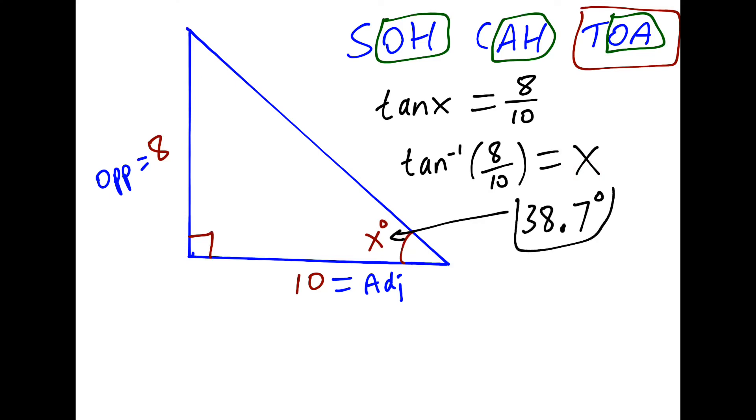It turns out this angle is 38.7 degrees. And if you take the tangent of 38.7, you get 0.8. Notice the ratio. 10 times 0.8 gives you this. It's the ratio between the two.